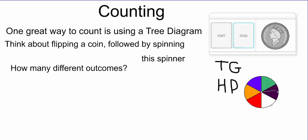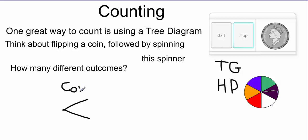We're going to use a tree diagram for this example. When we flip a coin and spin a spinner, we want to think about those two things as separate events. Each separate event makes part of our tree. Flipping the coin is the first level of our tree. How many possibilities are there when we flip a coin? There are two. So our tree starts with two branches representing the two possibilities — heads and tails.